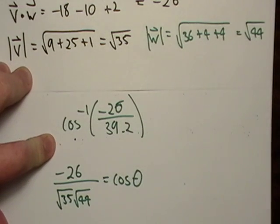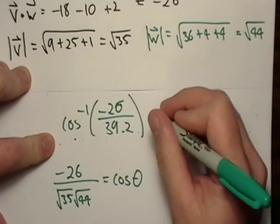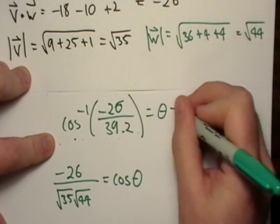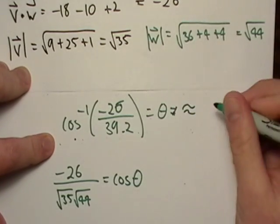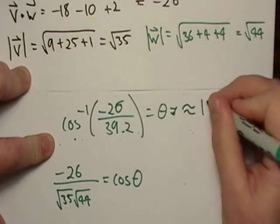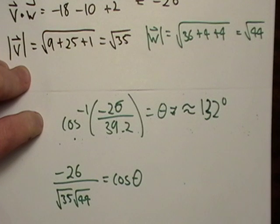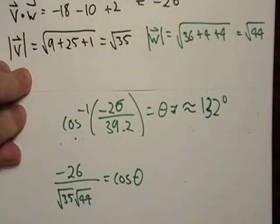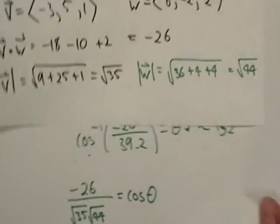And we'll call it 39.2. Well, I guess I could have just typed it in that way. Oh, well, negative 26 divided by 39.2. So it looks like theta, in this case, is going to be equal to approximately 132 degrees. So now we can use the dot product, not only to find perpendicular vectors, we can also find out what the angle is between those vectors.